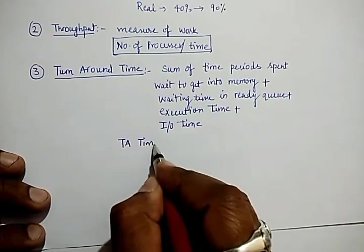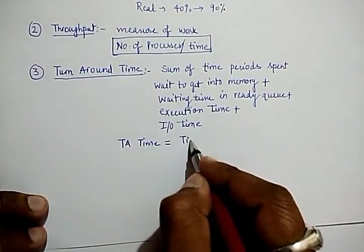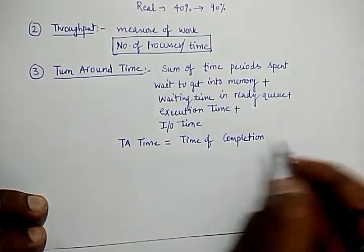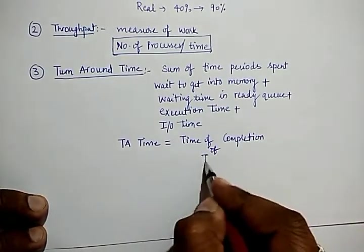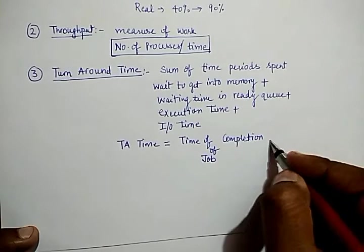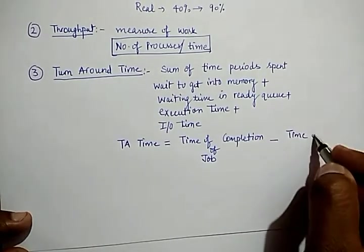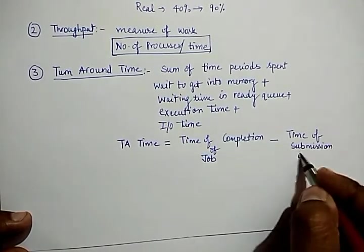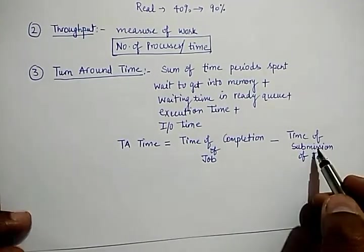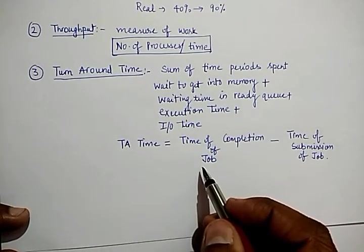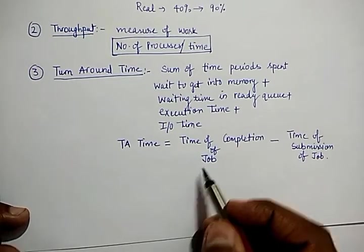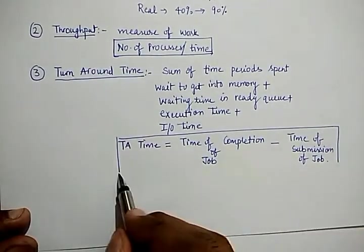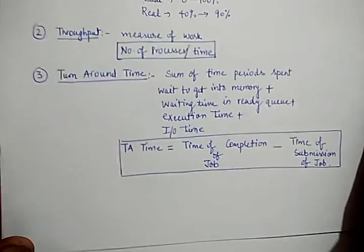To calculate turnaround time, the formula is: turnaround time equals the time of completion of the job minus the time of submission of the job. That is, at what time the process was submitted initially and at what time the process left the CPU after being completed. This difference is called the turnaround time, and this is the formula to calculate it numerically.